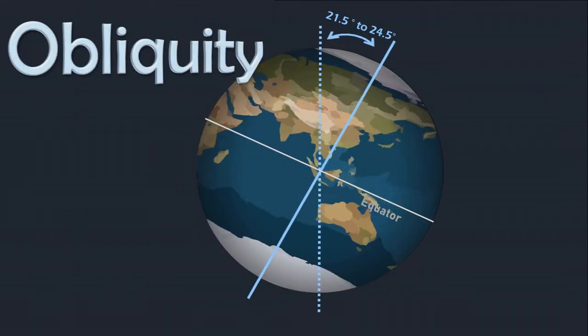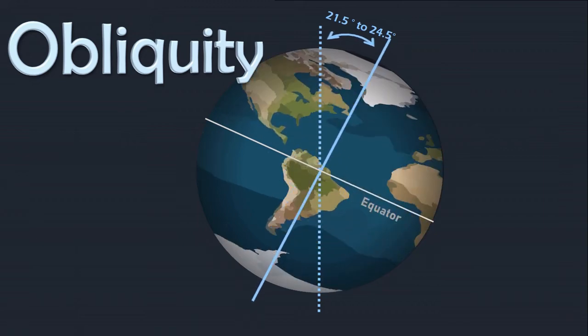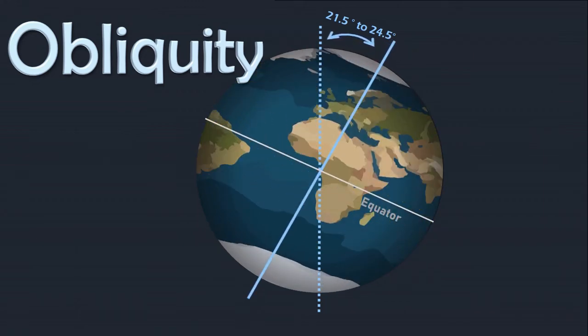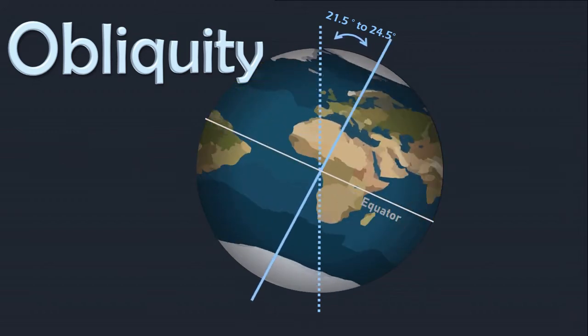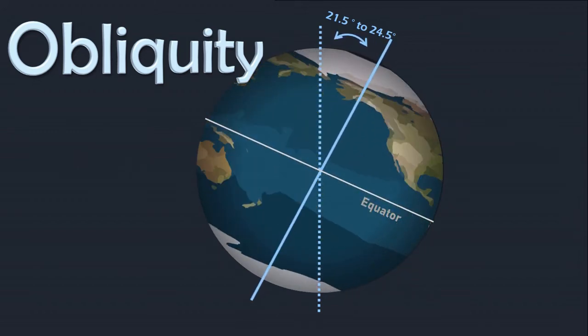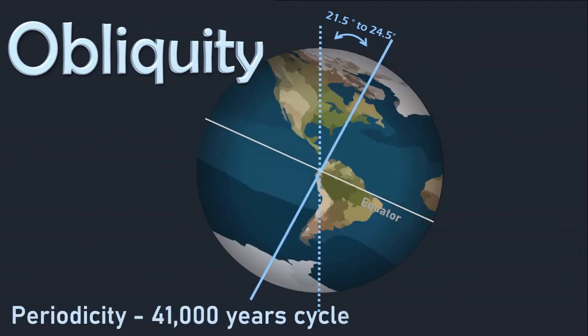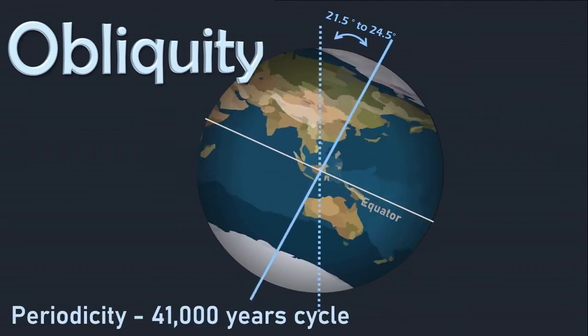Second anomaly is in the obliquity of Earth's axial tilt. Scientists have observed fluctuations in the degree of Earth's axial tilt. The axial tilt has oscillated from 21.5 to 24.5 degrees over a cycle of 41,000 years.